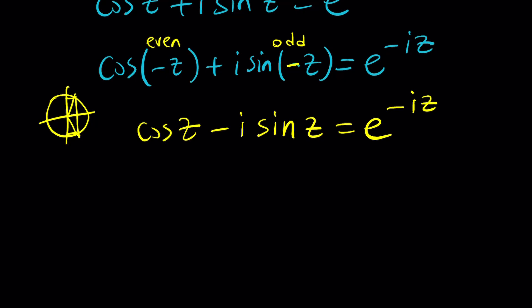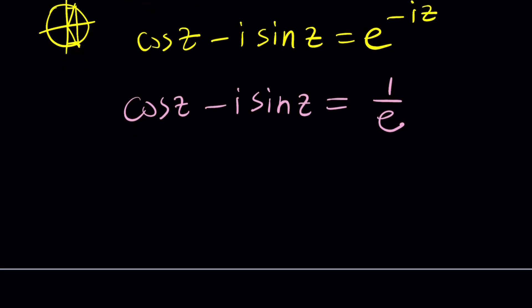Cosine z minus i sine z is equal to that. So in our equation, what was the original problem? Cosine z minus i sine z equals 1 over e. Now we can go ahead and replace this with that, and that's going to give us e to the power negative i z equals 1 over e. So that simplifies our equation a great deal.